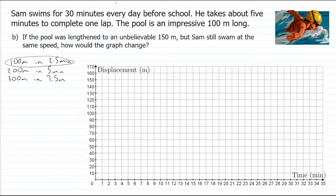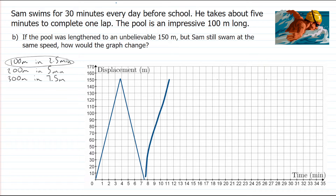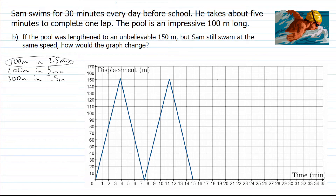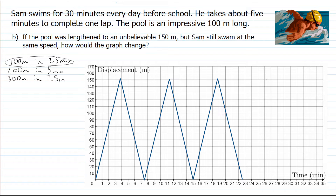On the displacement-time graph, a full lap takes seven and a half minutes, so he reaches the other side in half that time — 3.75 minutes. He gets back to the start at seven and a half minutes. Continuing this pattern with peaks at 3.75-minute intervals, he completes two laps in 15 minutes, meaning he gets four laps total in the half-hour period.